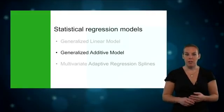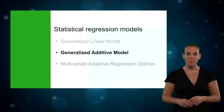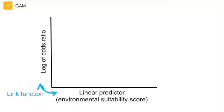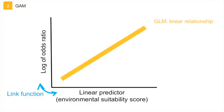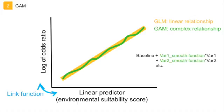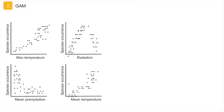The next statistical regression algorithm that I'll explain is the generalized additive model, or GAM. Generalized additive models are an extension of generalized linear models, and they have the same features: the linear predictor that combines all environmental variables in an overall environmental suitability score, and the link function that transforms the response into the log of the odds ratio. While GLMs construct a linear function between the response and the predictors, a GAM takes into account that the relationship might be of a more complex form and not entirely straight. To fit this complex relationship, the coefficients of the predictor variables in the linear predictor are replaced by a smoothing function. For each environmental variable that you put into the model, the GAM algorithm calculates a smooth function that fits the data as closely as possible.